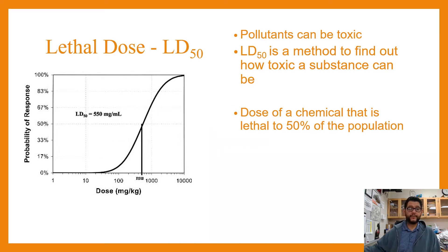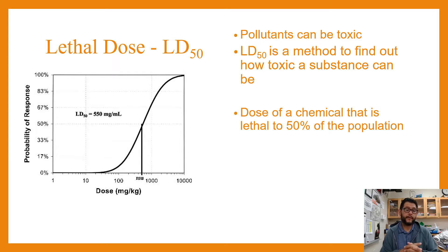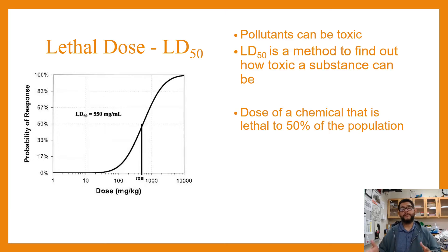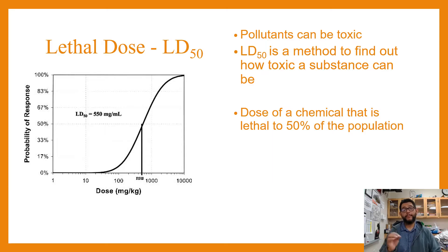The way I want to put this together is because lethal dose 50 is where we're talking about pollutants. We're looking at pollutants and toxicity to find out exactly how toxic something is. This is done in a lab where they typically have a chemical and measure what amount of that chemical kills 50% of the population.